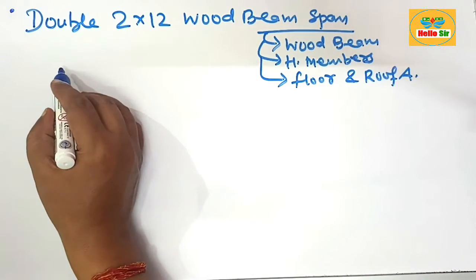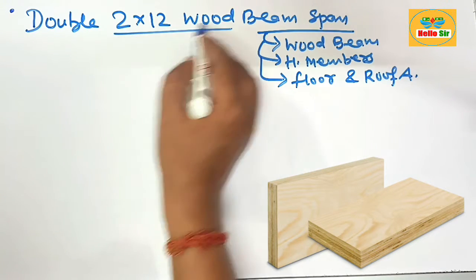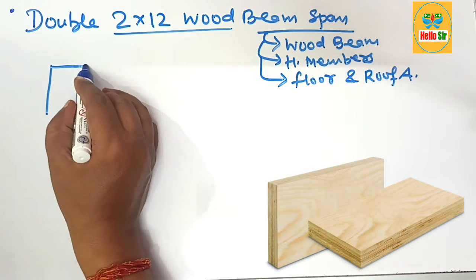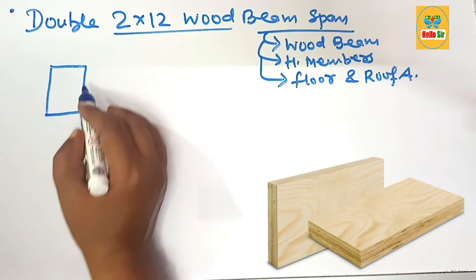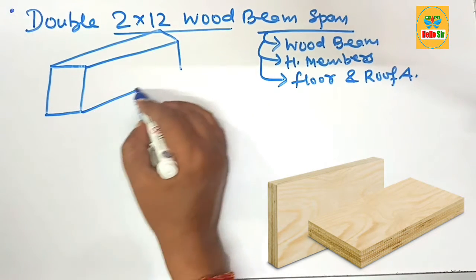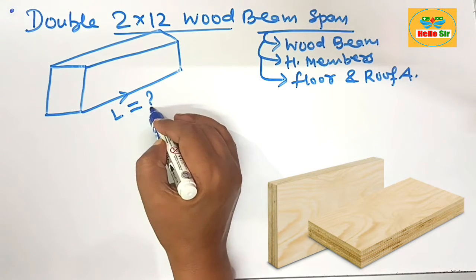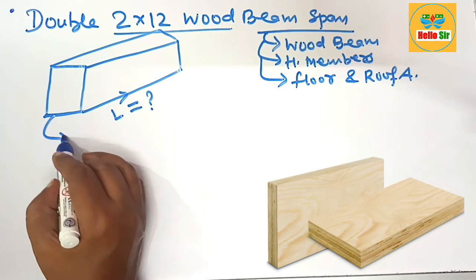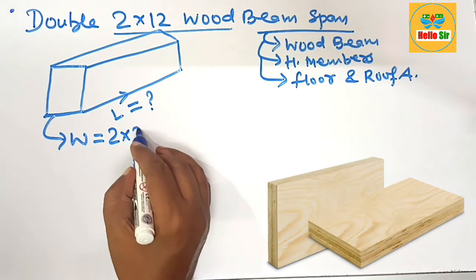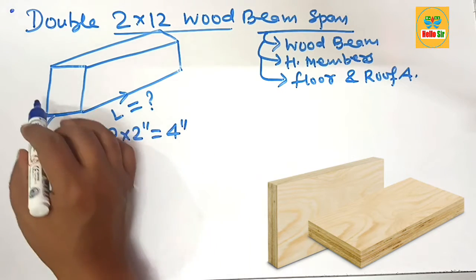First, we make a rough diagram to understand the dimensions for this wood beam. This is the length of span you have to figure out. This is the width, which is double 2 inches, meaning 2 multiplied by 2 inches equals 4 inches. And this is the depth of the beam, which equals 12 inches.